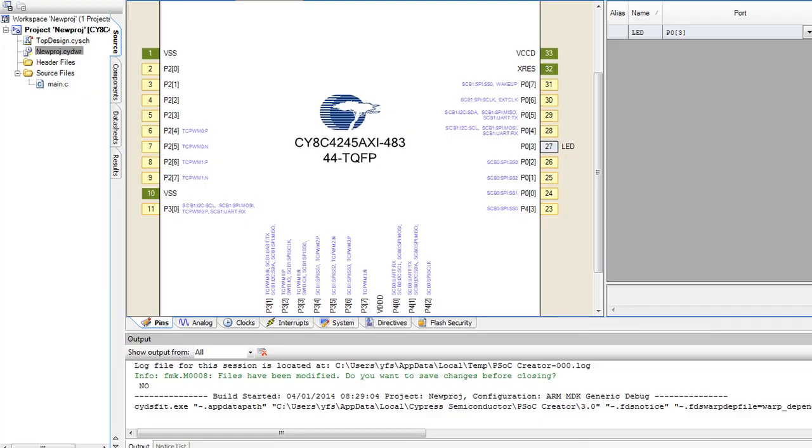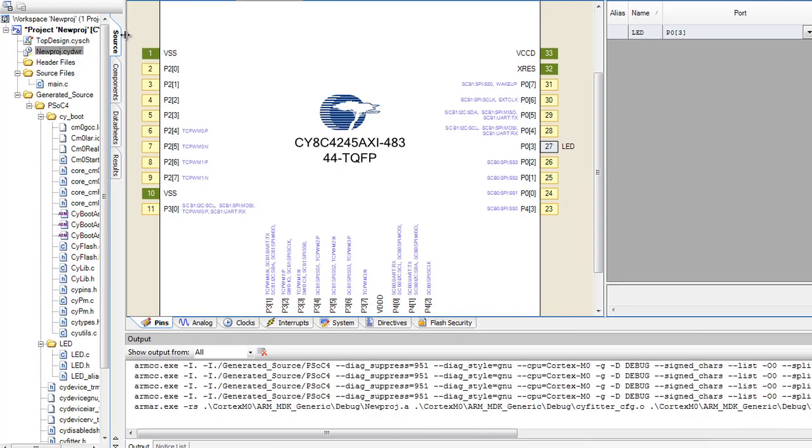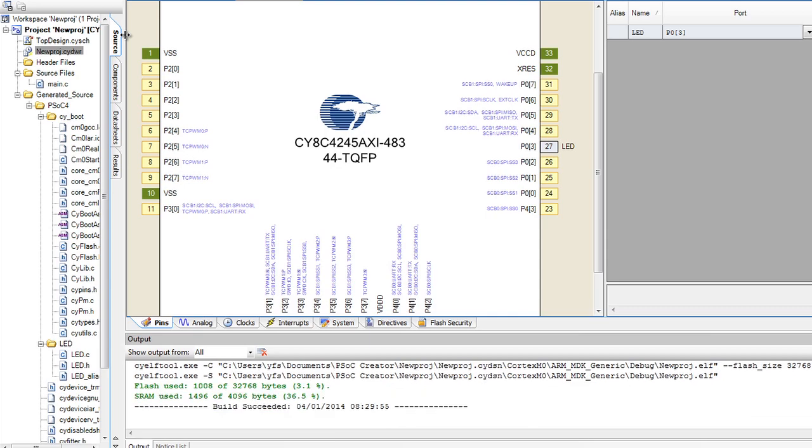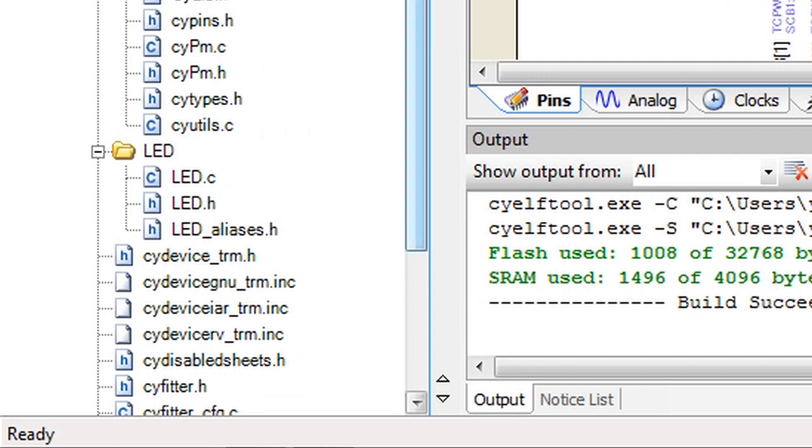That's all it takes to set up an output pin. You don't need to pore over the device address map or memorize a bunch of register names and bit fields. PSOC Creator generates APIs for all of that when you build the project. Here, you can see the source code that controls the pin. These APIs are documented in the component datasheet.